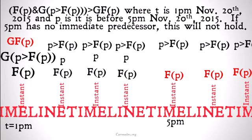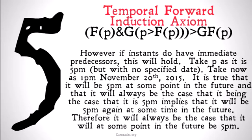While all of these things are true assuming time is dense, our consequent is not fulfilled — 'it will always be the case that P is true at some point in the future' is not fulfilled, because while for all moments between 1 p.m. and 5 p.m. Fp is true, any moment afterward Fp is actually false. It's not going to be the case past 5 p.m. that it is now before 5 p.m. November 20, 2015 again. The point is: if time is dense, this will fail. This means time is not dense. However, if instances do have immediate predecessors, this will hold — take P as '5 p.m.' without a specified date, and time always cycling back to 5 p.m. the next day means the consequent is satisfied. So as long as time is discrete and not dense, we're okay. The temporal forward induction axiom is telling us that time is not dense.